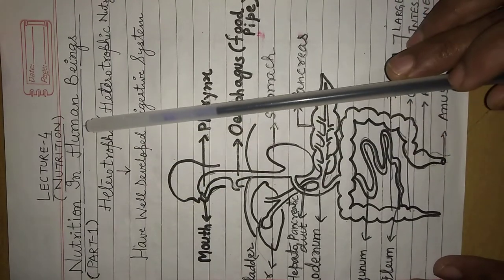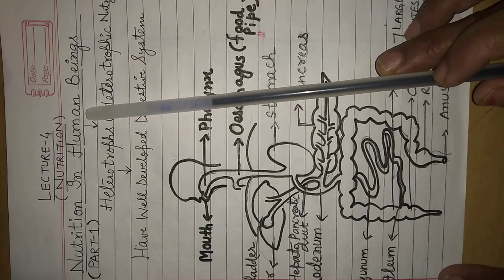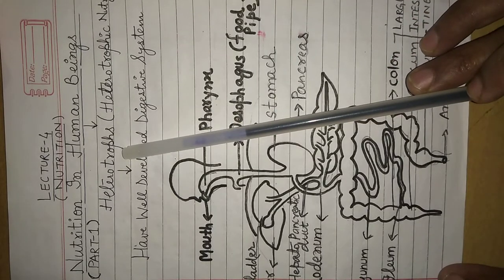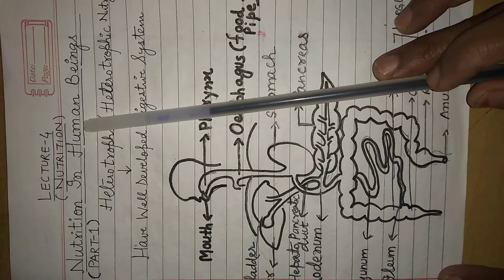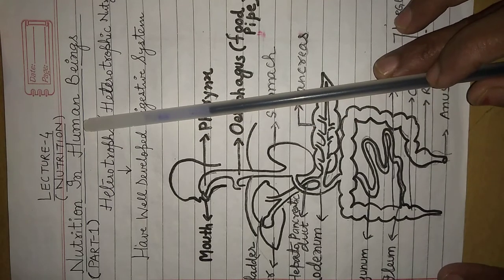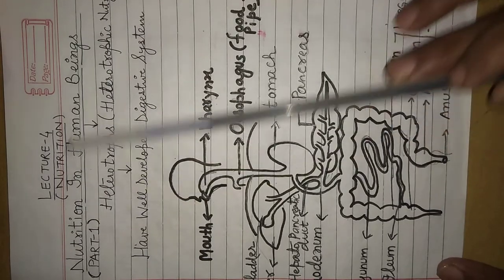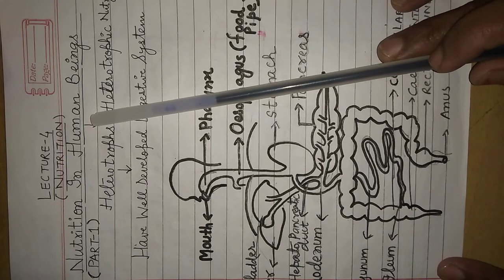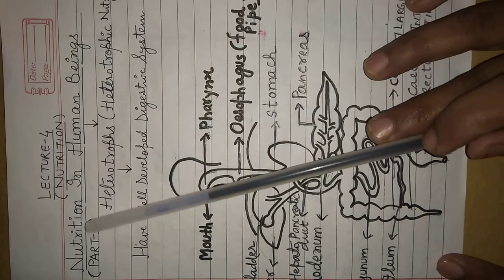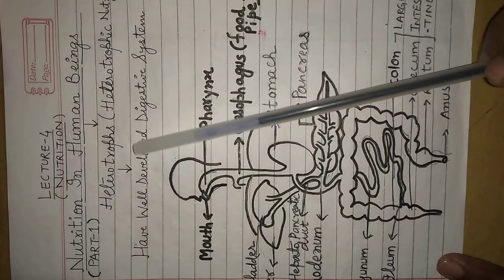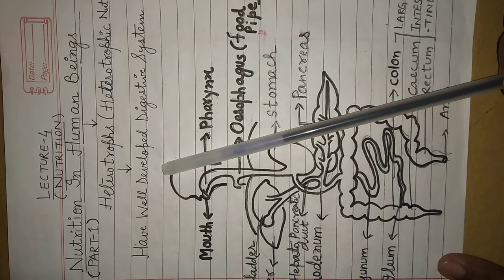As we know, human beings are higher organisms and higher animals — they perform heterotrophic mode of nutrition. Human beings ki jo body hoti hai, uska organization bahut complex hota hai. Kisi bhi process ko perform karne ke liye, human beings have a well developed organ system.